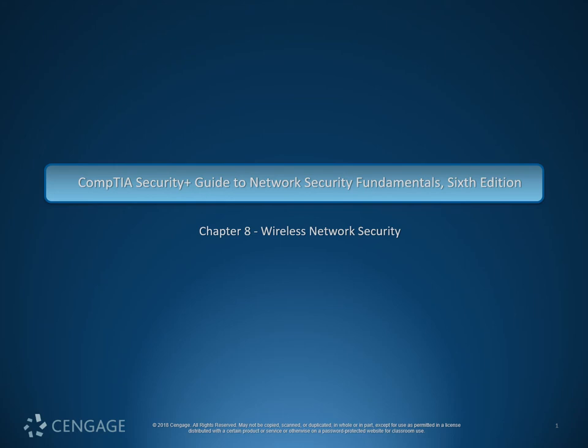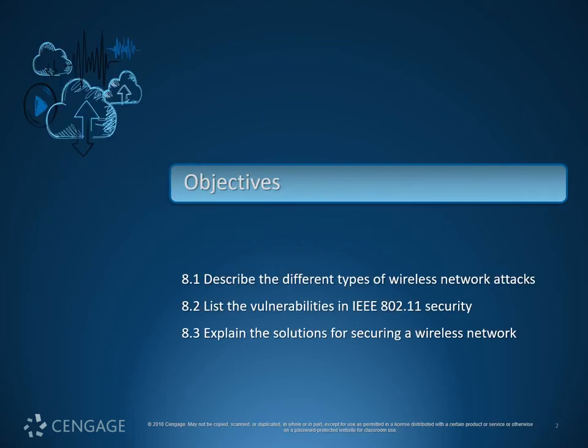Mr. Arnke back with you again for Chapter 8 of our SEC 110 Lecture Series. Today we're going to be talking about wireless network security. We're going to look at the different types of wireless network attacks, vulnerabilities in IEEE 802.11, and explain solutions for securing those vulnerabilities when building a wireless network.